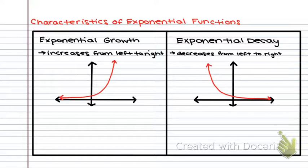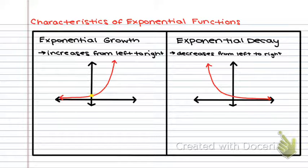I did not cross the x-axis on either of my functions, and that is a very important thing to keep in mind. Now we're going to label a couple of pieces on that graph. One of them is pretty obvious — that's the y-intercept. That right there is the y-intercept on the growth graph, and that right there is also the y-intercept on the decay graph.